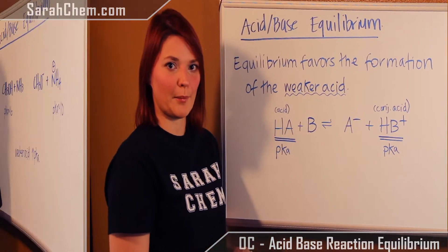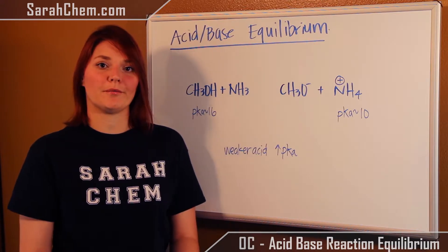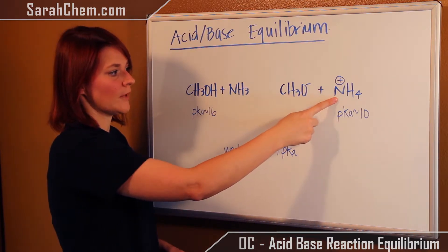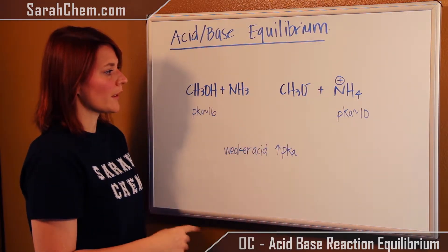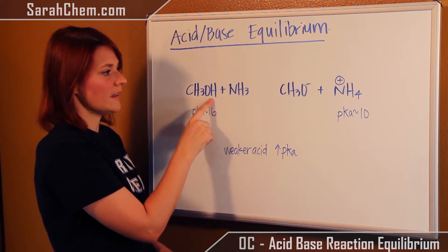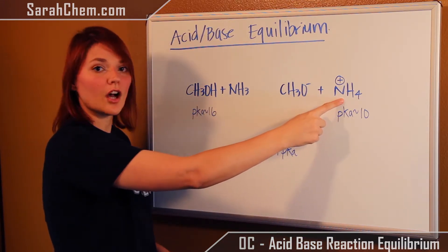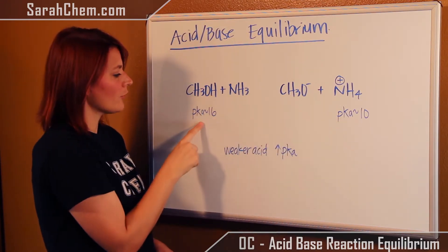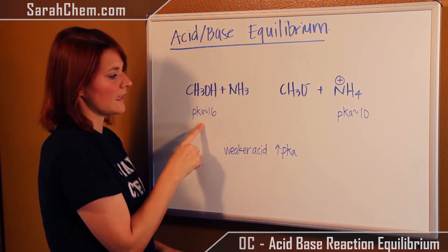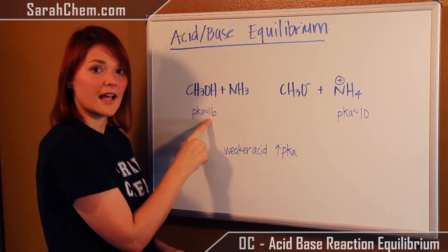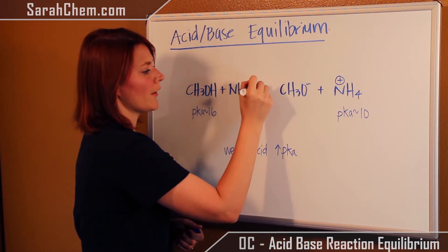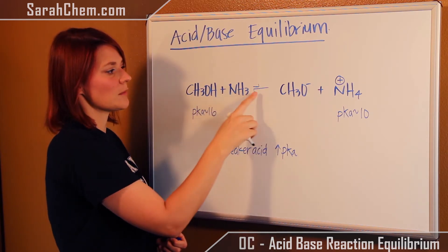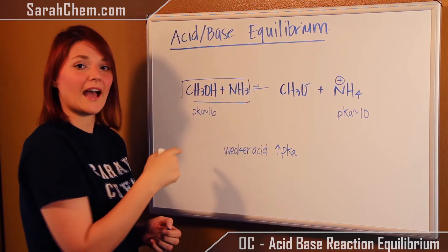Let's take a look at a specific example. We have a reaction between methanol and ammonia, forming methoxide and ammonium. The pKa's we care about are the pKa of the reacting acid and the pKa of the conjugate acid, which is related to the base. The rough pKa of ammonium is about 10, and for methanol it's about 16. Methanol is the weaker acid because it has the higher pKa. So we draw equilibrium arrows that are not proportional, primarily pointing toward the reactants — equilibrium favors the reactants in this case.